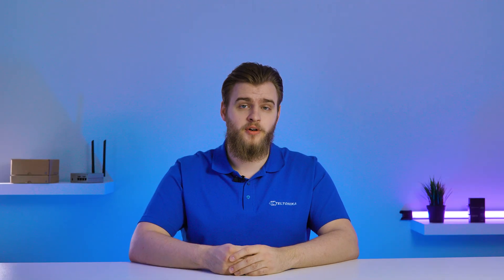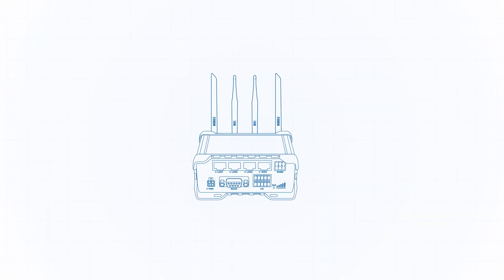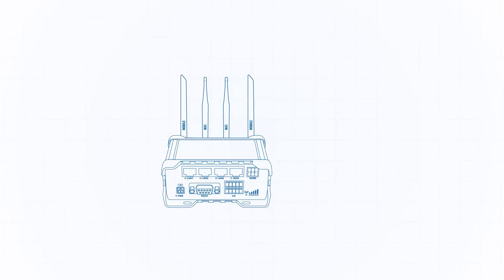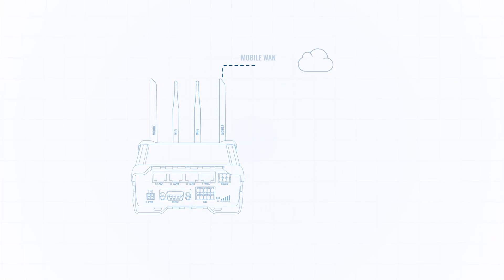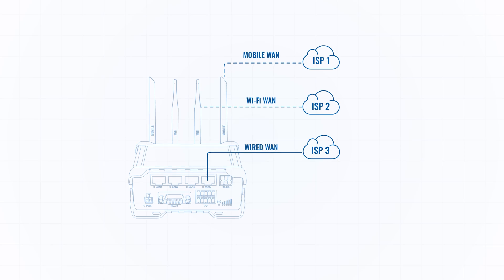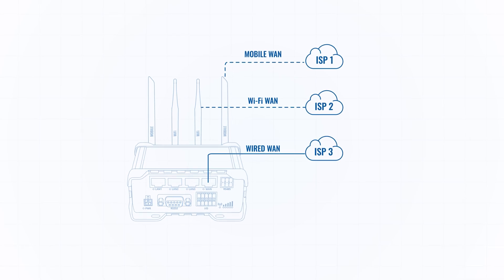As failovers are usually configured on different WAN interfaces of the router, let's look at an example to see the principle of this function. Here we have our RUT956 cellular router, which has three WAN interfaces: mobile, Wi-Fi, and wired connectivity options.